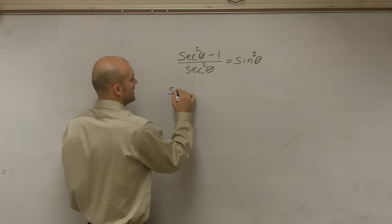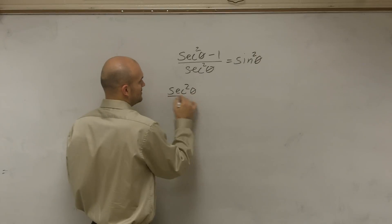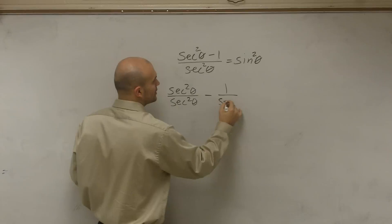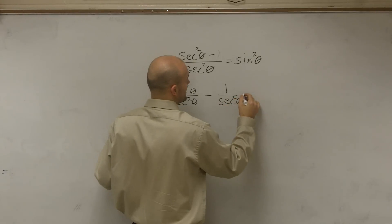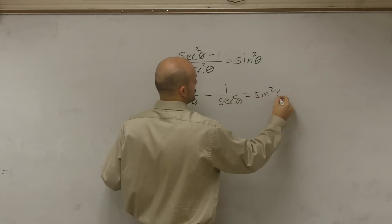Therefore, I can rewrite the left side as secant squared of theta divided by secant squared of theta minus 1 over secant squared of theta equals sine squared of theta.